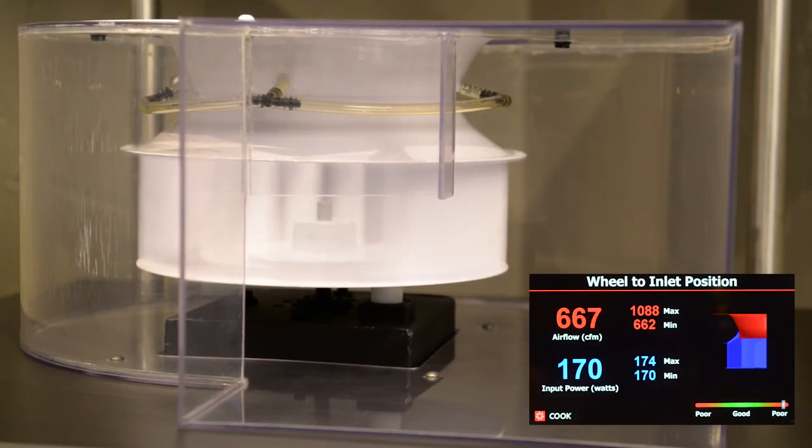This is because the wheel is doing the same amount of work, but some of the air is leaking back into the inlet of the wheel, a low pressure area, from the discharge, a high pressure area.